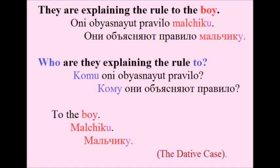They are explaining the rule to the boy. Они объясняют правила мальчику. The noun here is 'the boy' — мальчику — and the ending is -у. The question would be: who are they explaining the rule to? To the boy — мальчику.